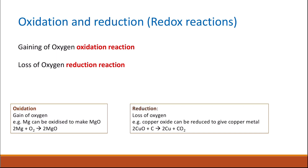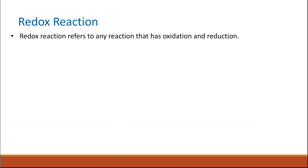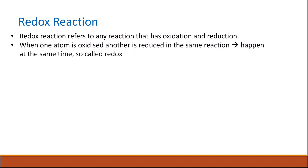Reduction is defined by the loss of oxygen. For example, copper oxide is reduced to give copper metal: copper oxide with carbon gives copper metal and carbon dioxide. The copper has been reduced because it lost an oxygen. We call it a redox reaction because whenever there is oxidation, there must be a reduction taking place at the same time.